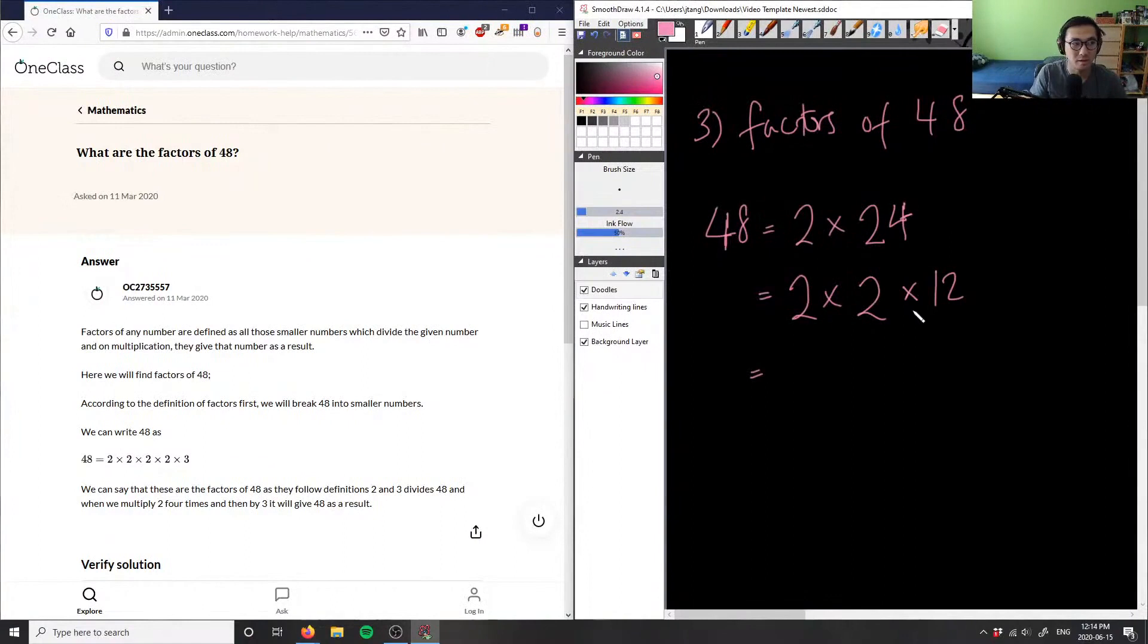And then I take 12 and I can again break that down. I realize that 2 is, again, it's an even number, which means 2 must be another factor. So I can break it down into 2. 12 divided by 2 is equal to 6.